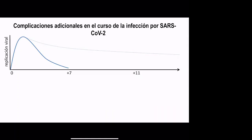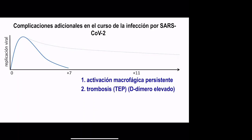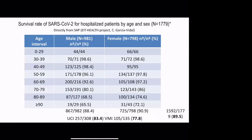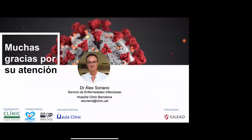Finally, in other webinars of this series you will find information about other complications associated with this infection: persistent macrophage activation particularly associated with high ferritin levels, thrombosis associated with high D-dimer levels, renal failure, organizing pneumonia, and bacterial or fungal superinfections. There are many complications associated with this virus and we need to learn more and more. This has been a brief summary of the evolution of this infection in our hospital. Thank you for your attention.